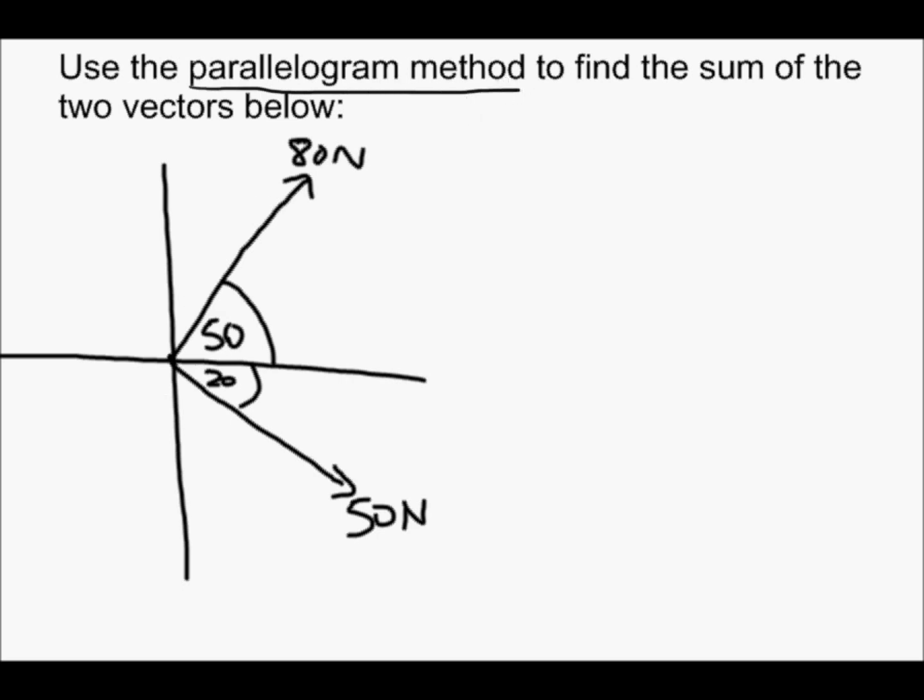The first thing I'm going to do is take this 50 N vector and draw it in a tail-to-head fashion with this 80 N one. So basically move this up so that it starts at the head of the 80 N vector, goes in the same direction and the same length, but it's just a sketch, it's not going to be exact. So yeah, that's about what it looks like and this is going to be 50 N.